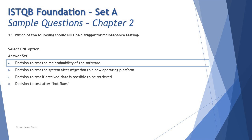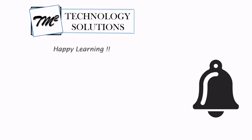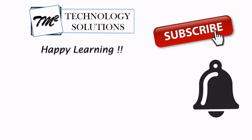The right answer is A: a decision to test the maintainability of the software. With that, we complete chapter two. We'll be looking at questions from chapter three in the next tutorial — stay tuned. Feel free to comment below with any questions. Keep learning, keep exploring, and happy learning!